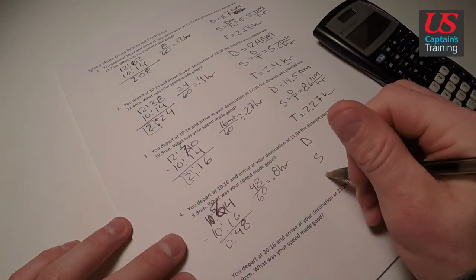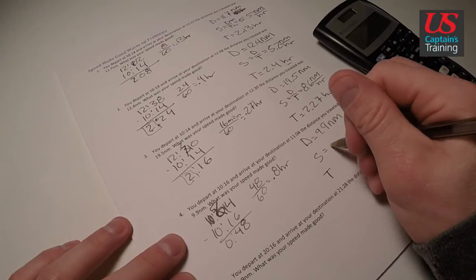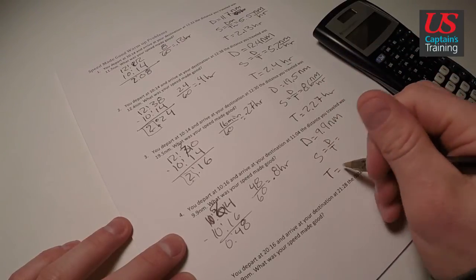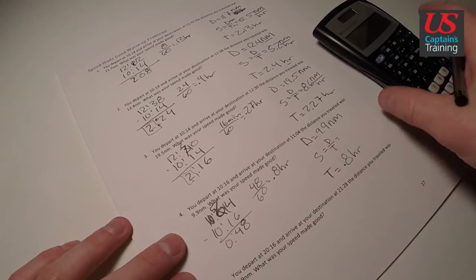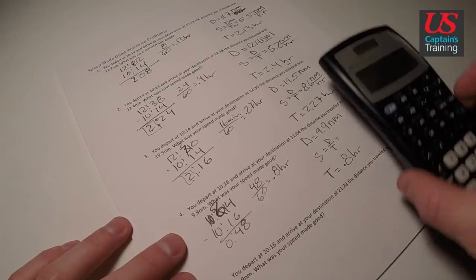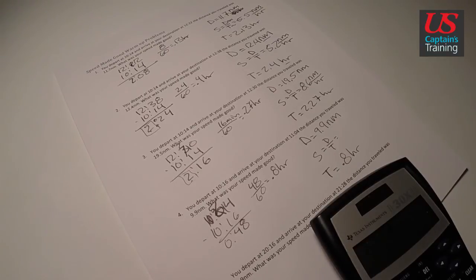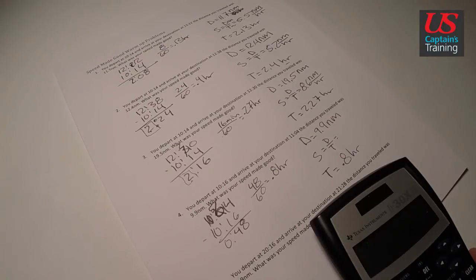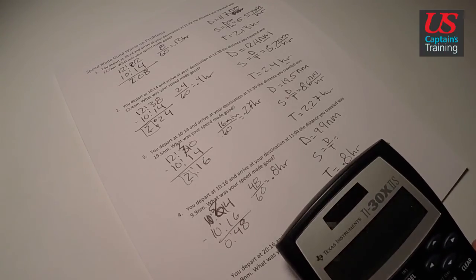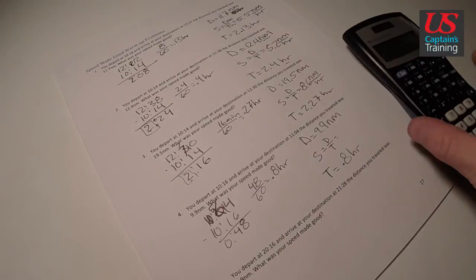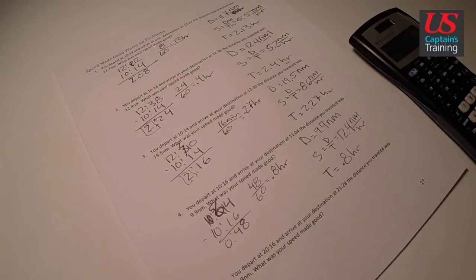So we have our distance, speed, time. The distance traveled was 9.9 nautical miles. Our speed is equal to distance over time. And our time, we found out, was equal to 0.8 hours. So distance divided by time, 9.9 nautical miles divided by 0.8 hours equals 12.375 nautical miles per hour. So let's say it's 12.375, so we'll say 12.4. 12.4 nautical miles per hour or knots.